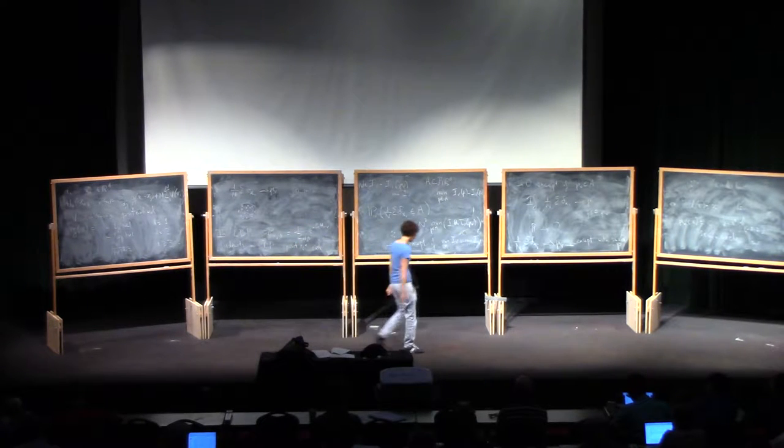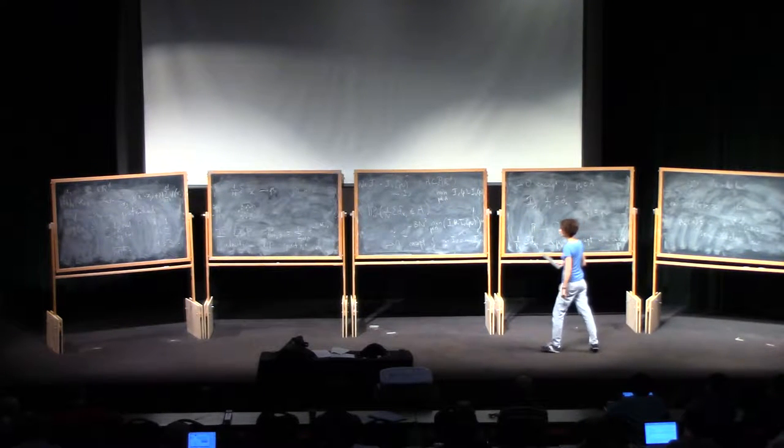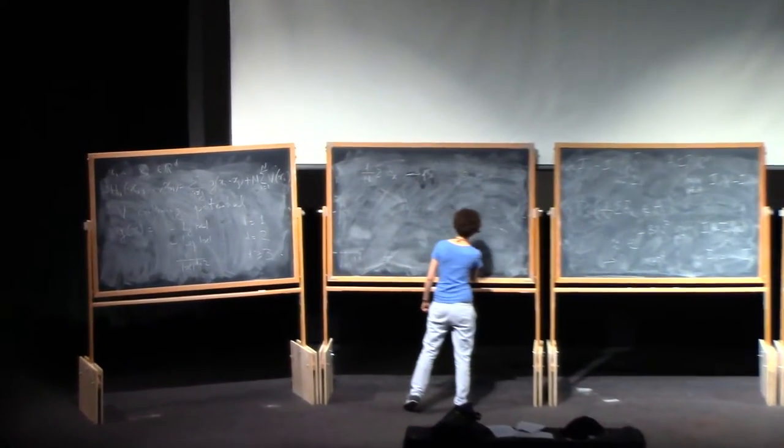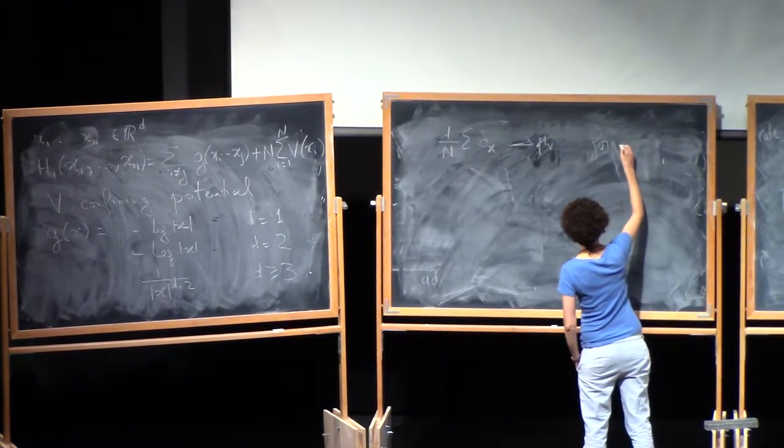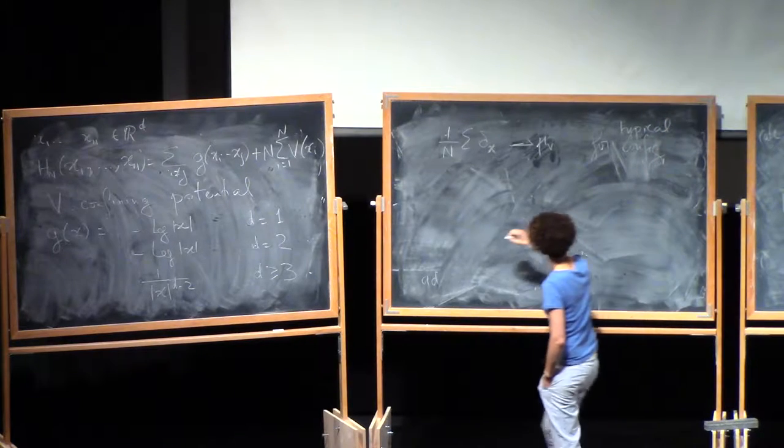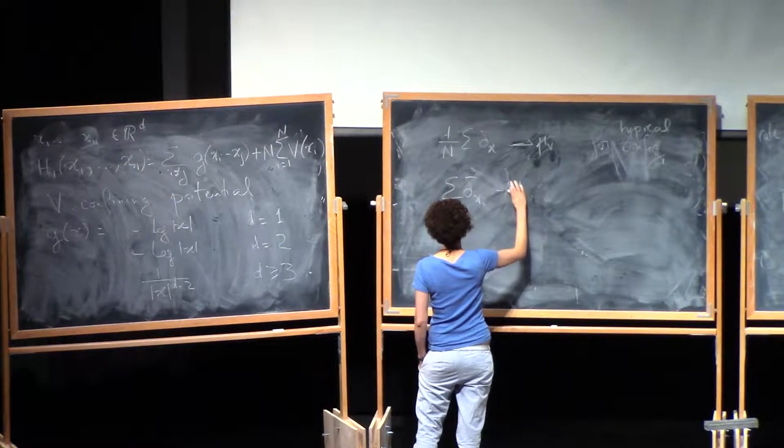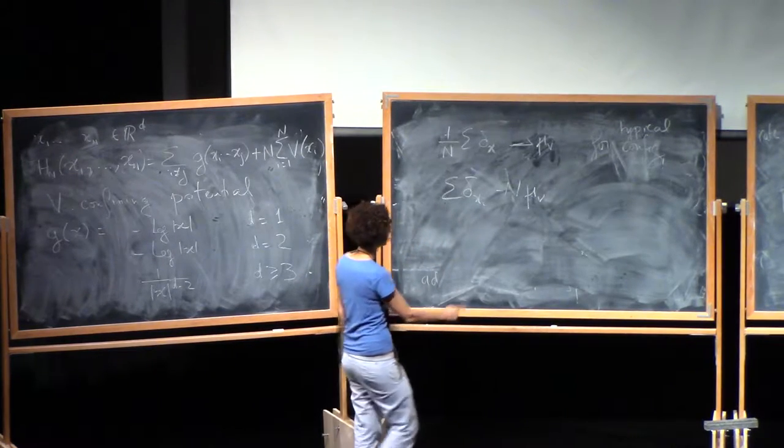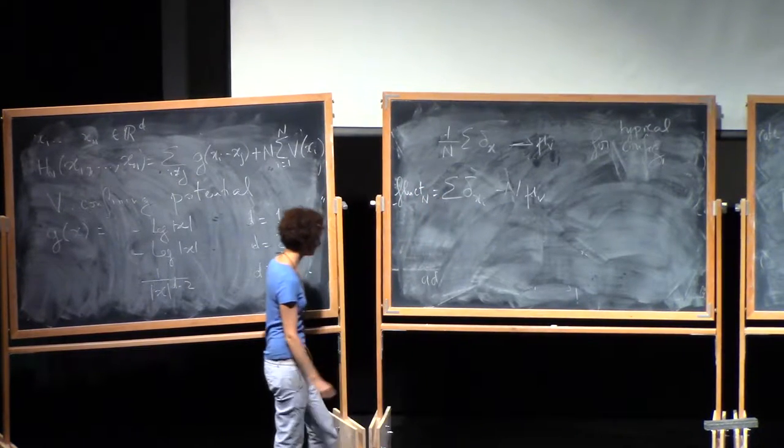Okay, so at this point we can pause and ask ourselves the main questions that we want to ask, which is now we know this thing. We know the sort of macroscopic behavior. We know it for minimizers, but also for situations with temperature. So let's say for typical configurations.